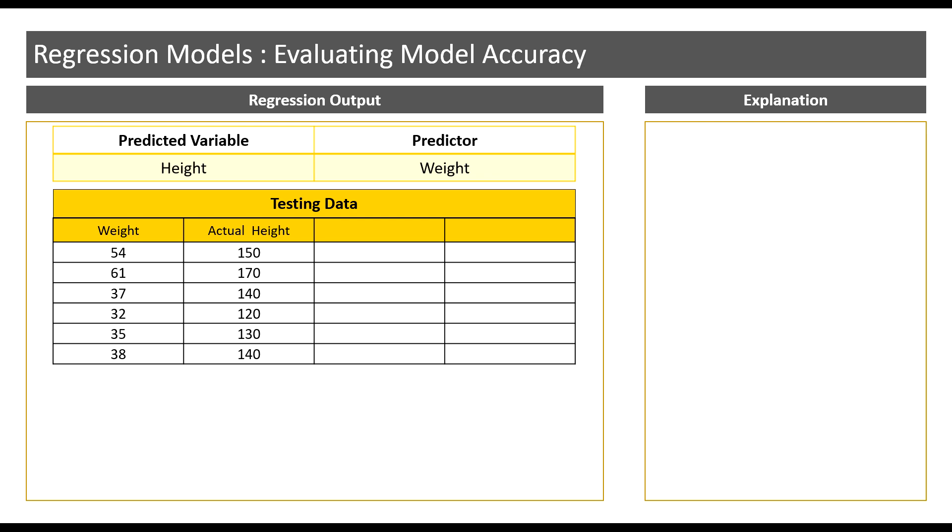Here, the model will analyze the patterns in the training dataset by understanding the relationship between the predictor and the predicted variable, which in this case is weight and height respectively. The model will then build a logic to predict height using weight as an input variable.